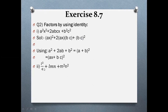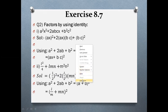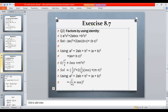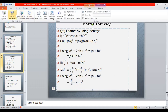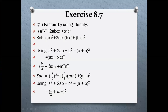Second part: L²/4 + Lmn + m²n². L²/4 is a perfect square of L/2, and m²n² is a perfect square of mn. The middle term: 2 × (L/2) × mn = Lmn. Confirmed. Using (a + b)² = a² + 2ab + b² with a = L/2 and b = mn, the answer is (L/2 + mn)².